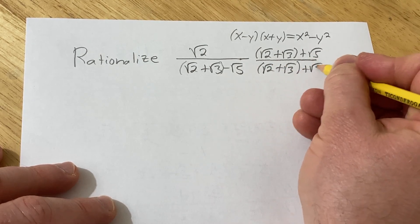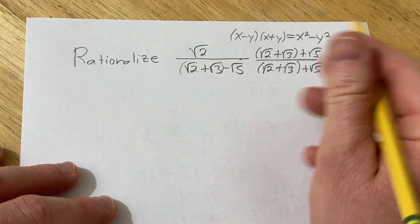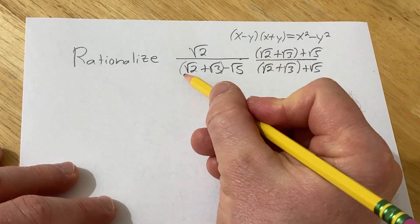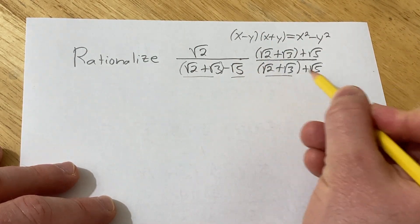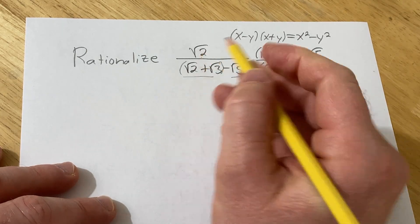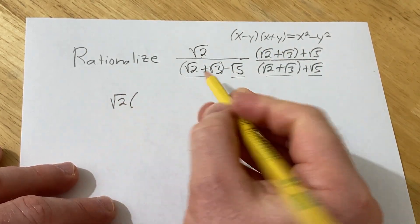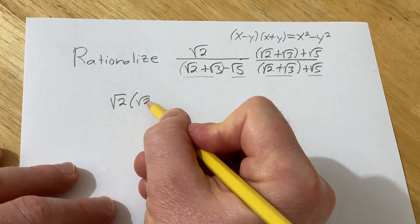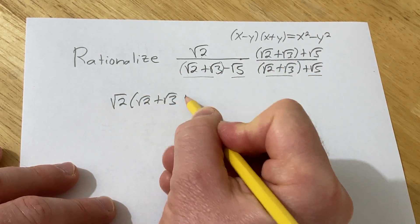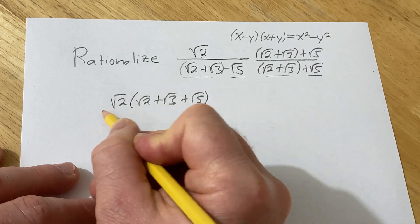Normally in math you just can't multiply by something, right? But you can multiply by 1 without changing anything. So now this is your x, this is your y, this is your x, this is your y. So in the numerator we have the square root of 2 and then we have this piece here. Square root of 2 plus square root of 3 plus square root of 5 over.